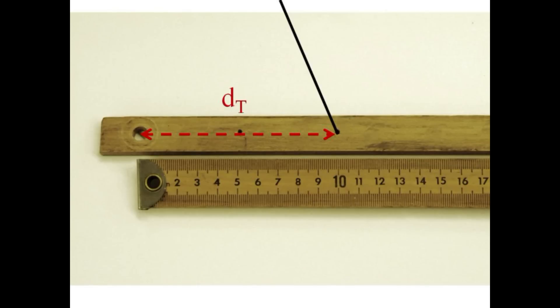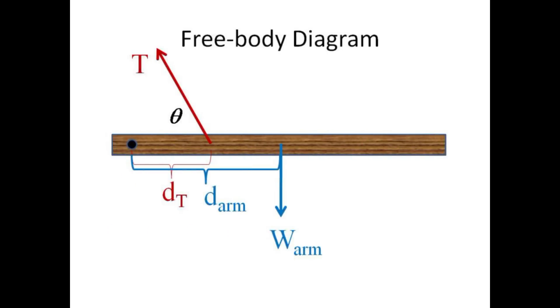The distance D sub T can be measured from the elbow joint to the point where the string attaches. The weight of the forearm acts at the center of gravity of the wooden forearm with a perpendicular angle to produce a clockwise torque.